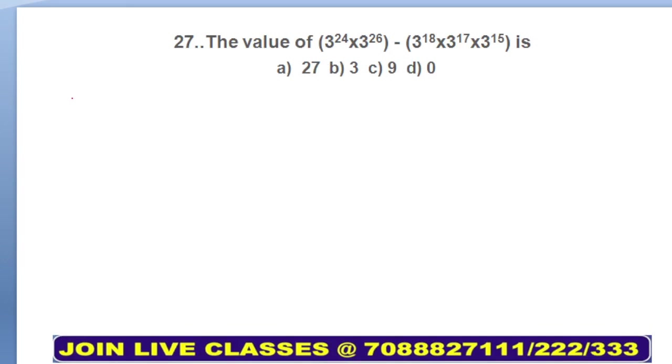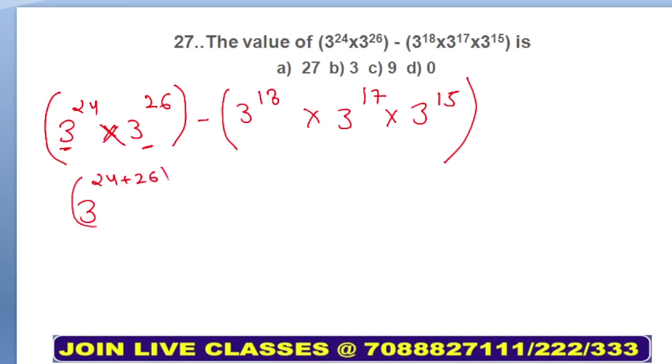Next question is the value of 3^24 × 3^26 - 3^18 × 3^17 × 3^15. Let me write it here: 3^24 × 3^26 - 3^18 × 3^17 × 3^15. What will be the value? You can see here the bases are same and they're being multiplied, so powers will be added: 24 + 26. Here also the same concept: 18 + 17 + 15.